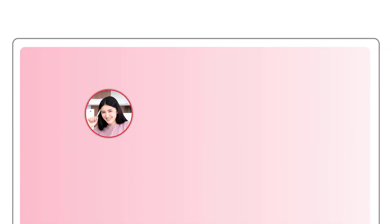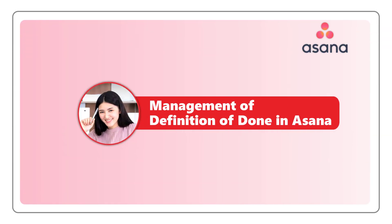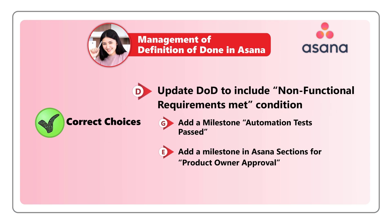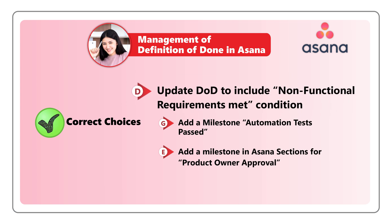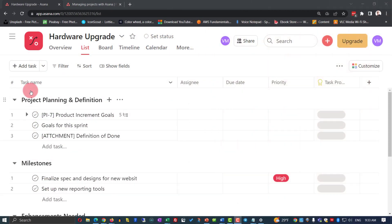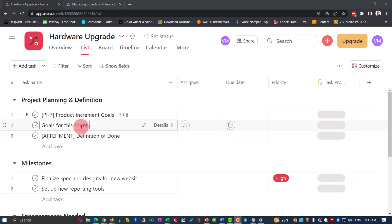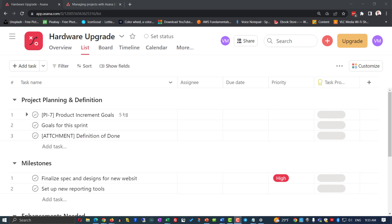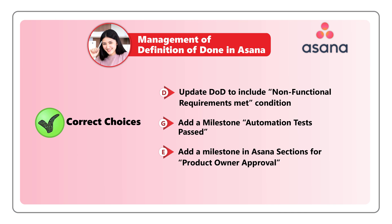So how can management of definition of done be accomplished in Asana? If you need to use choice D and update definition of done to include non-functional requirements met condition, you might decide to make changes in the project planning and definition sections inside Asana. This section consists of product increment goals, goals for the sprint, as well as an attachment — probably a Microsoft Word file — with the definition of done.